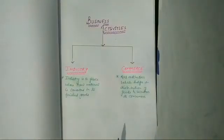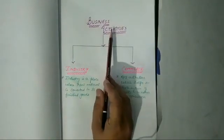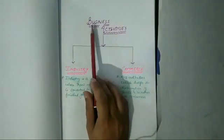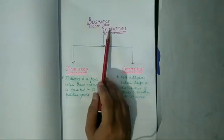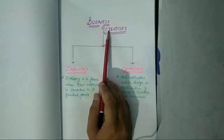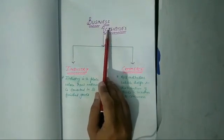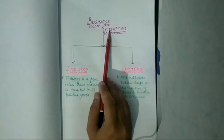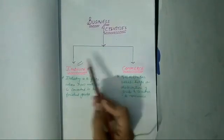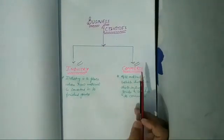Hello everyone. Our next topic is the classification of business activities. I have told you about business activities in our previous classes. Business activities mean the economic activities which are undertaken to earn money or profit. The business activities are classified into two broad categories: industry and commerce.